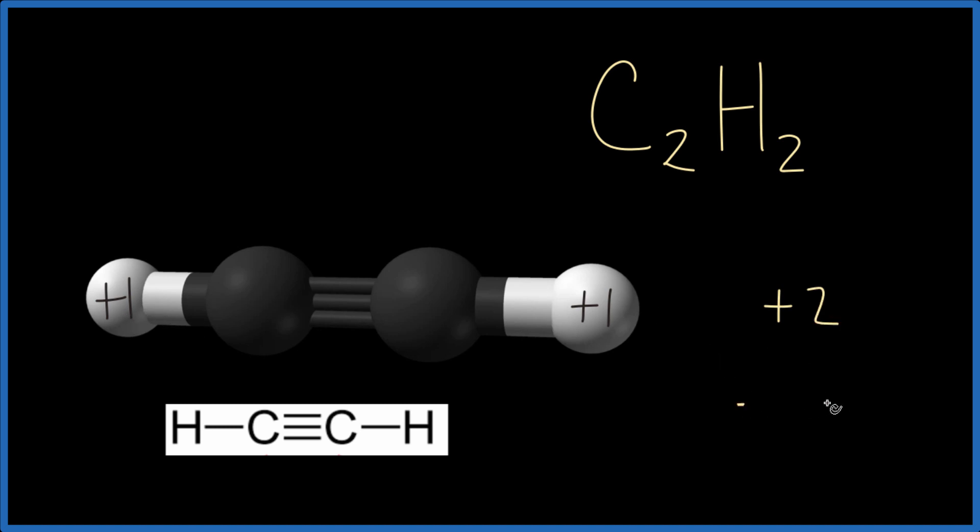So we need to know plus two plus something is going to give us zero, this neutral molecule. Well, plus two and a minus two, that works out, that gives us zero.